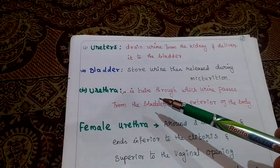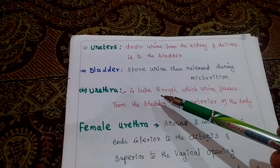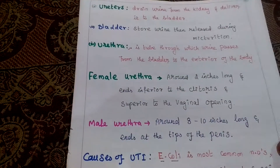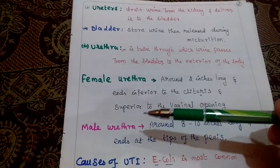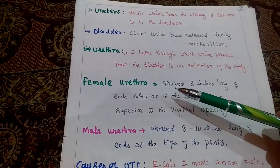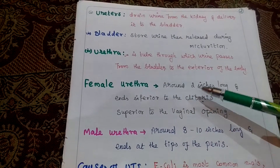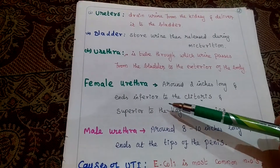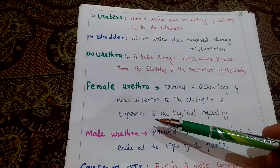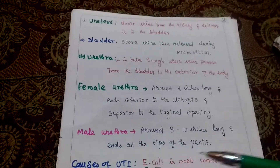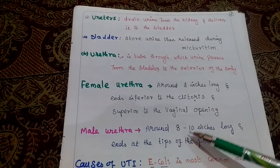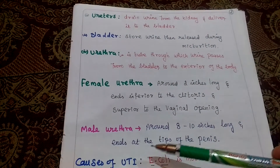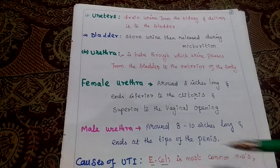The urethra is the tube through which urine passes from the bladder to the exterior of the body. Regarding male and female urethra differences: the female urethra is around 2 inches long, with its anterior end inferior to the clitoris and superior to the vaginal opening. The male urethra is around 8 to 10 inches long and ends at the tip of the penis.